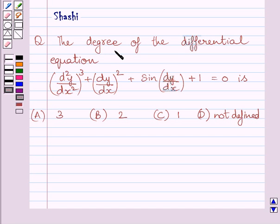Question says the degree of the differential equation d square y upon dx square whole cube plus square of dy upon dx plus sine dy upon dx plus 1 is equal to 0 is a 3, b 2, c 1, d not defined.